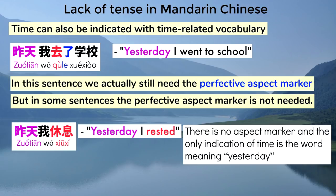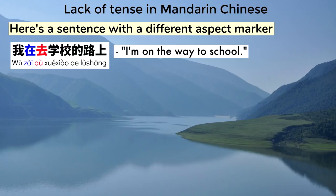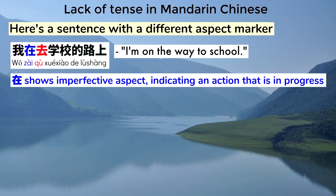Here's a sentence with a different aspect marker. This means I'm on the way to school. This word shows imperfective aspect, indicating an action that is in progress, and again not necessarily in the present. And this part at the end here means on the road. These are two common aspect markers in Mandarin, but there are others.